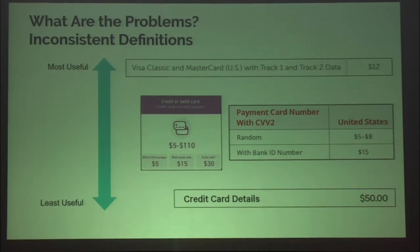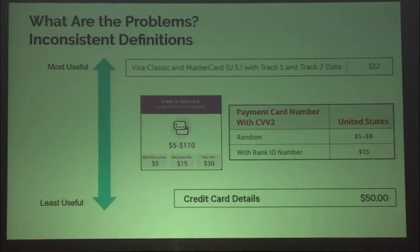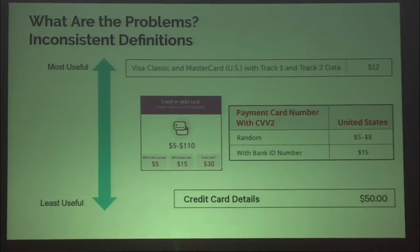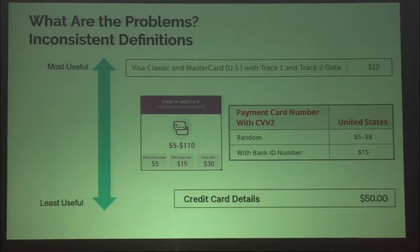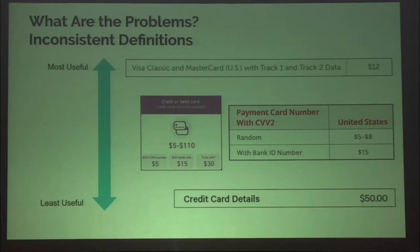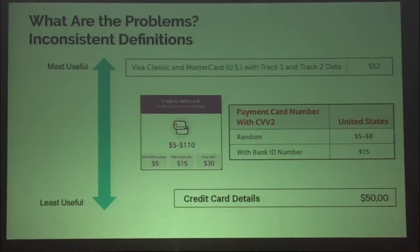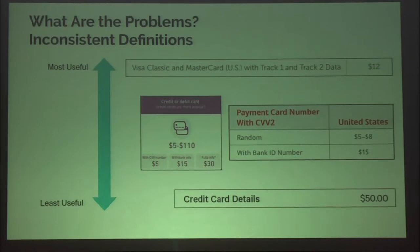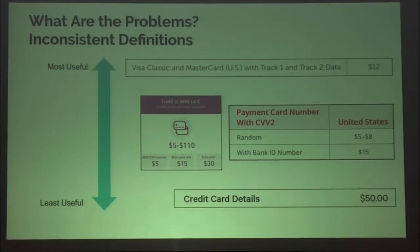A little bit above that, we have a little more information: 'payment card number with CVV2' — that's the three-digit code on the back of a credit card, which is more helpful. The odd thing about both this one and the one next to it is they mention bank ID number or bank information. But that's kind of a weird thing to call out because every credit card number already contains the bank ID number, or BIN, which is the first six digits. Trying to sell a payment card without a BIN is like trying to sell a car without an engine.